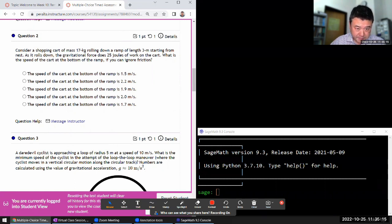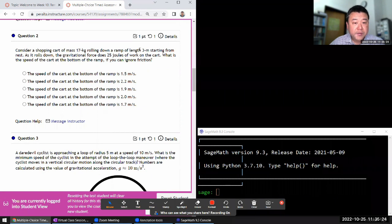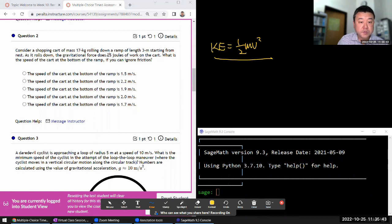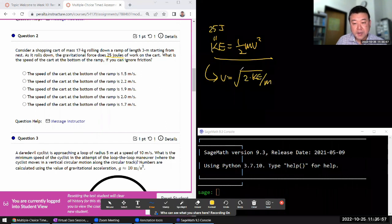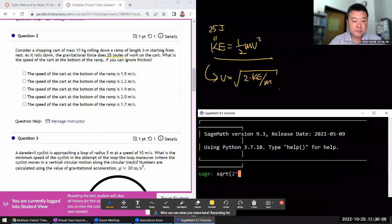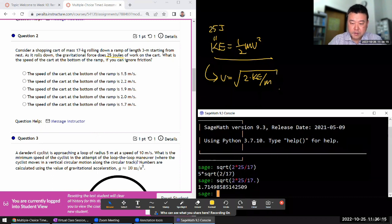Consider a shopping cart of that mass rolling down. Does that many joules of work. We can ignore friction. So we are using this expression for energy, one that says kinetic energy is equal to one half m V squared. And by telling us how much work gravitational force does, they've given us the kinetic energy. So I just solve this for speed. V is equal to square root of two times kinetic energy divided by mass. And that's the answer. Let me just do that here. Square root of two times 25 joules, which will be the kinetic energy divided by 17 kilograms. 1.71 meters per second. So that looks like this one.